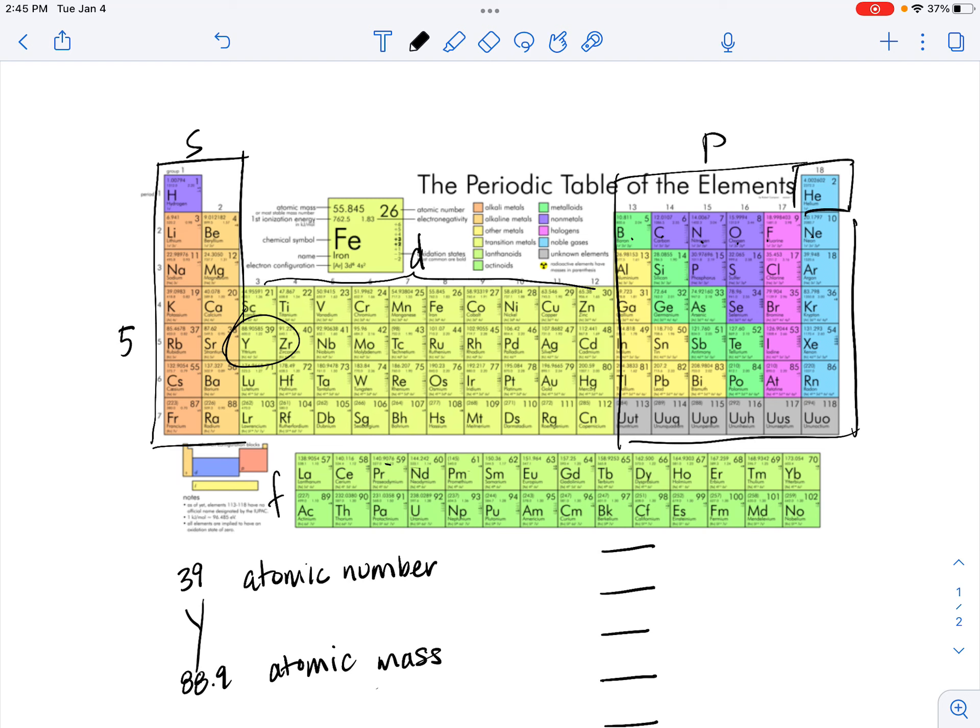So we can use this information to write the electron configuration. Now there are a couple of kinks in the pattern. If you remember back to unit seven, for example, the first row of the D block is actually the 3D orbital block. And then the fifth row is 4D, the sixth row is 5D, the seventh row is 6D. And then the F block would be 4F and 5F.